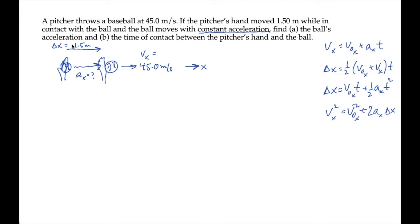There's one other number that we can write down that they don't explicitly tell us in the problem, but we can get using our common sense. The pitcher's hand starts from rest, so v_0x is zero. The pitcher is now going to accelerate it from zero to 45 meters per second over this distance of one and a half meters, and we're supposed to calculate a couple of things.